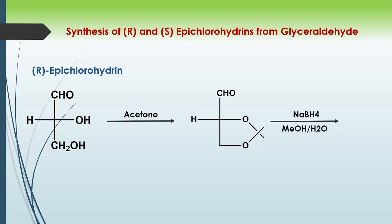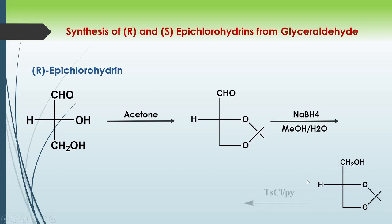In the next step there is a reduction using sodium borohydride in the presence of MeOH, so the aldehyde group is reduced to a primary alcohol and we get a CH₂OH group.